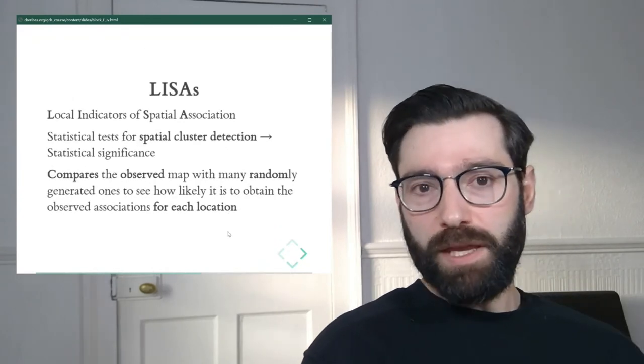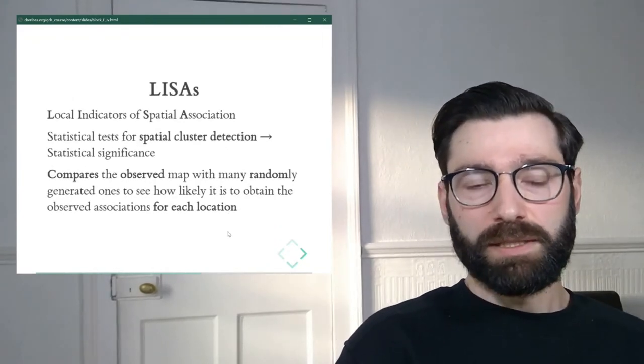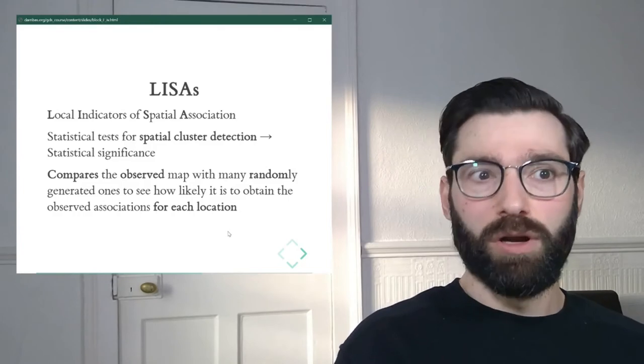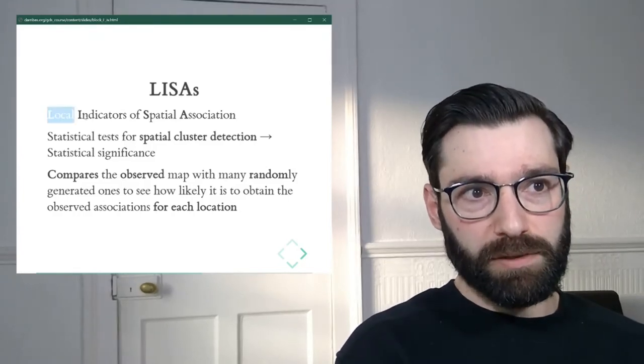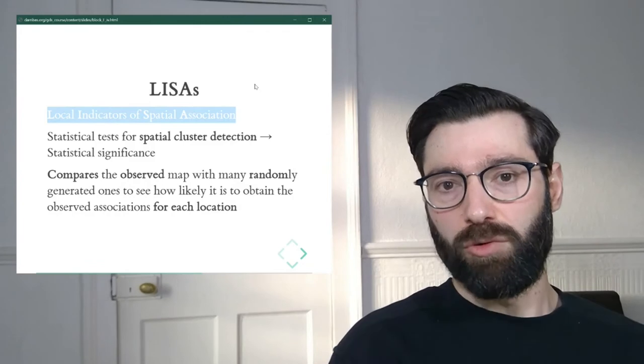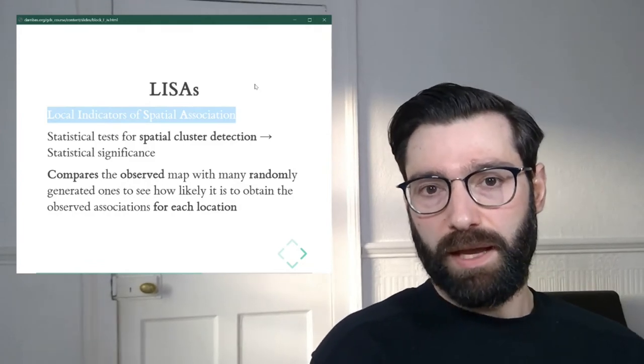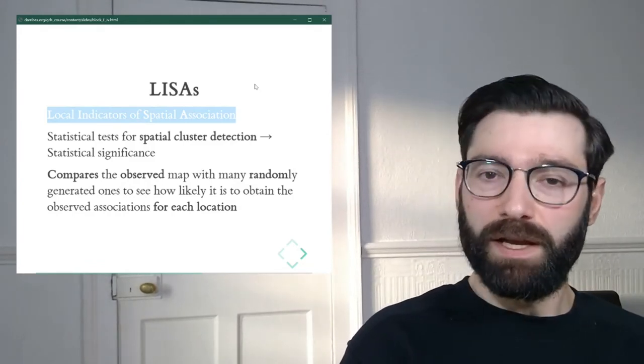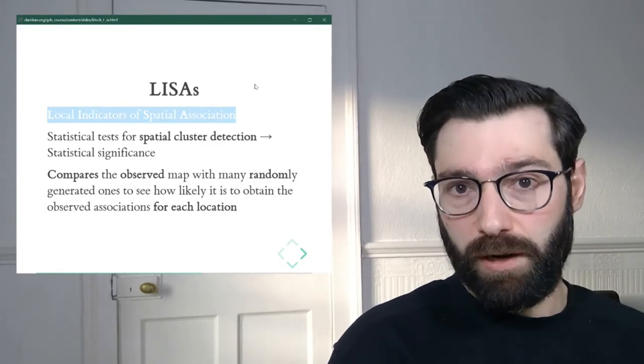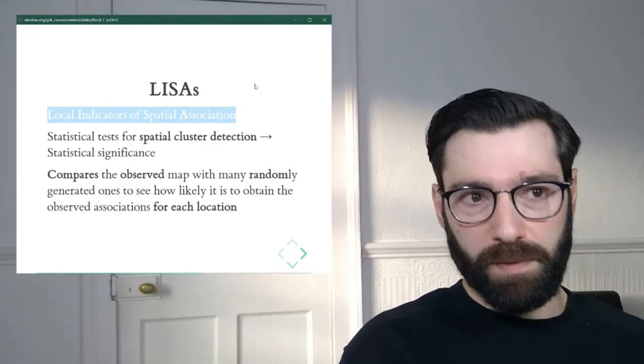And for these, we're going to consider something called LISAs, or Local Indicators of Spatial Association, which is an idea put forward by Luc Anselin in the mid-90s. And you can find the reference for the original article in the course website.